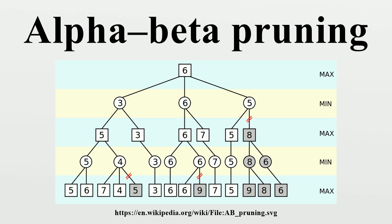Alpha-beta search can be made even faster by considering only a narrow search window, known as aspiration search. This is particularly useful for win-loss searches near the end of a game where the extra depth gained from the narrow window and a simple win-loss evaluation function may lead to a conclusive result. If an aspiration search fails, it is straightforward to detect whether it failed high or low, giving information about what window values might be useful in a re-search of the position. Over time, other improvements have been suggested, and the alpha-beta idea of Fishburn is nearly universal and already incorporated in a slightly modified form.